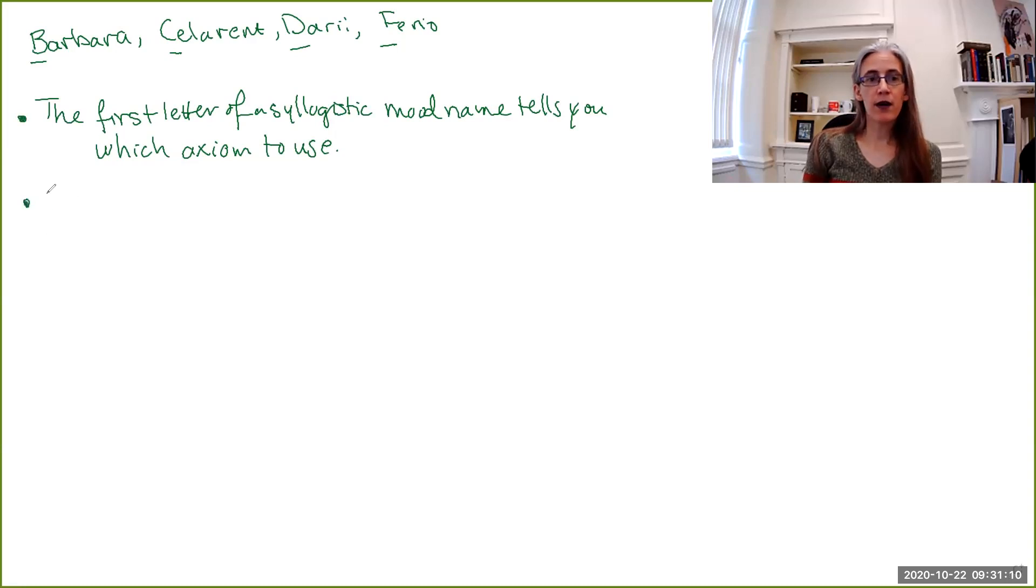The second part is the vowels. You may have already noticed that Barbara is a first-figure syllogism with two A-claim premises and an A-claim conclusion. Celarent, a first-figure syllogism with an E-claim major premise, an A-claim minor premise, and an E-claim conclusion. So this holds generally. The vowels represent the copuli of the moods.